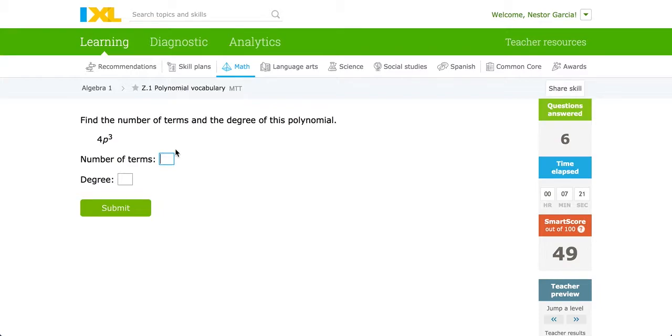Find the number of terms. Here we have one term, and the degree of this polynomial, the degree, 3, because 3 is the exponent.